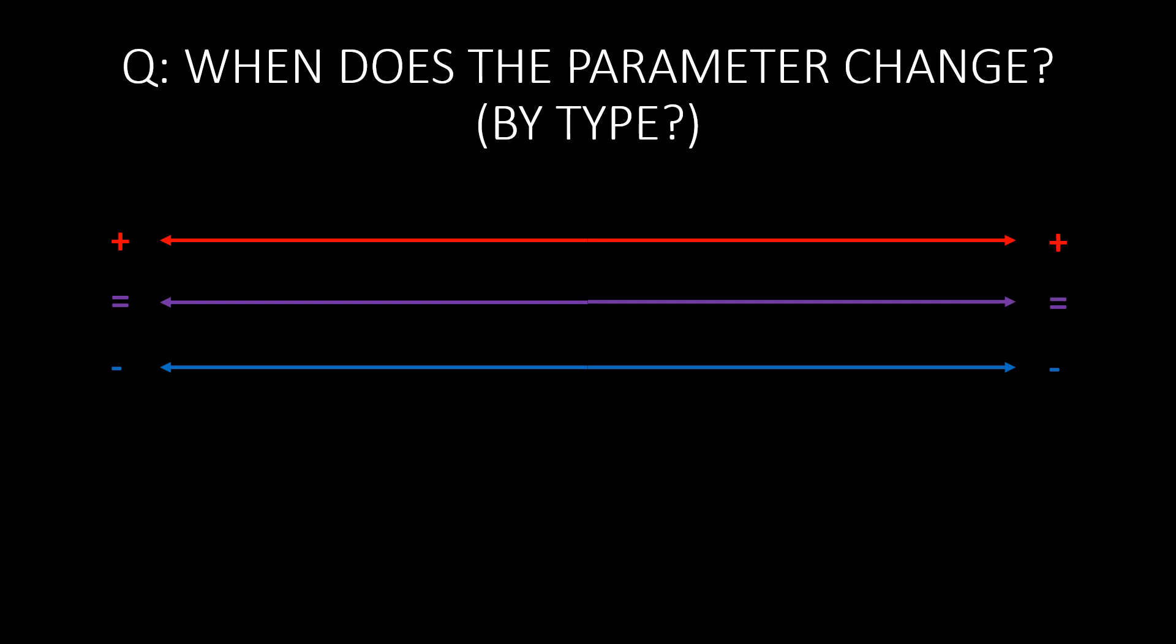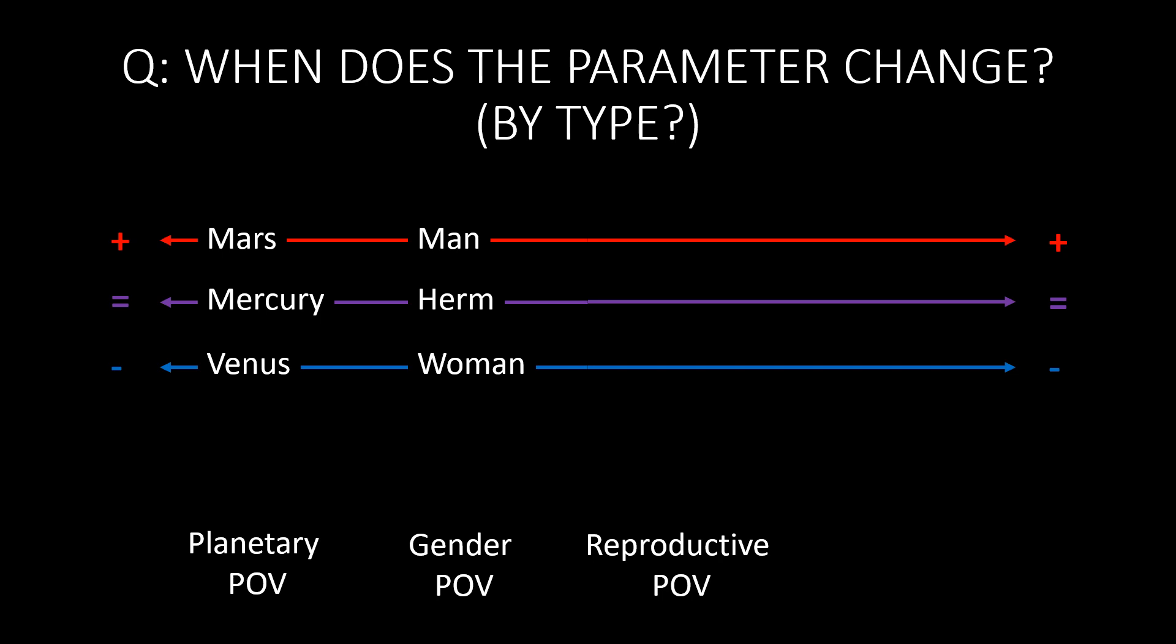You can even switch points of view. For example, the principle of polarity still applies when comparing a planetary point of view, for example Mars, Venus, and Mercury, with the gender point of view of a man, woman, and hermaphrodite, with a reproductive point of view of sperm and egg and the zygote. Light being positively charged, dark being negatively charged or magnetic, and the rainbow being neutralized or visible light in between. So when does the polarity change? The answer is never.